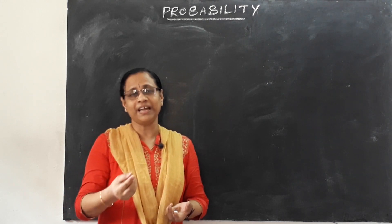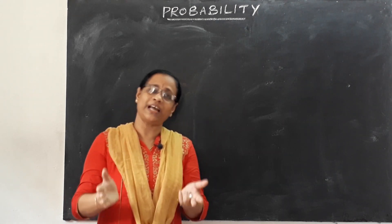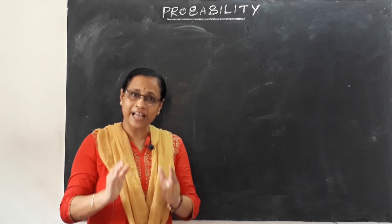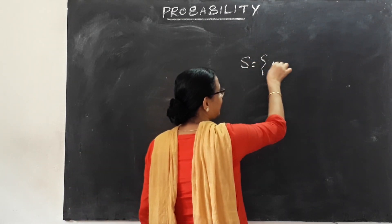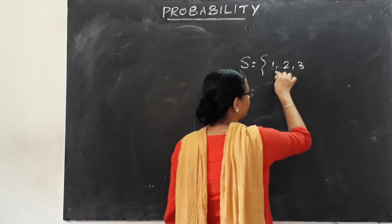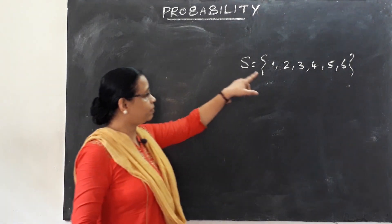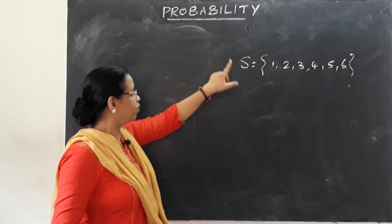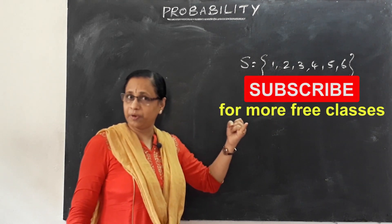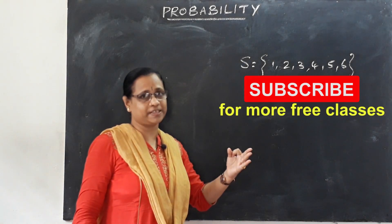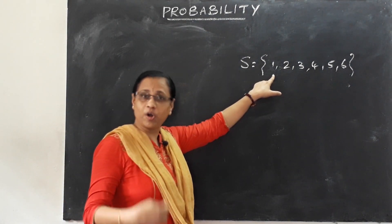Each outcome of a random experiment is called a sample point. The collection of all sample points is called the sample space. So we have: Random Experiment → Sample Point → Sample Space. A subset of a sample space is called an event.